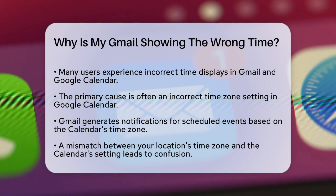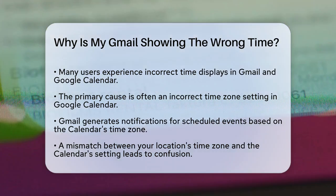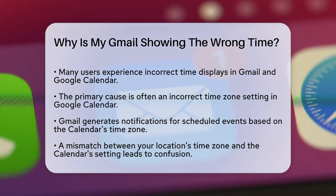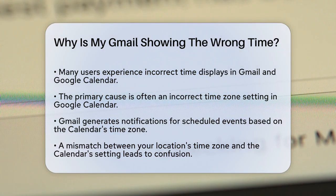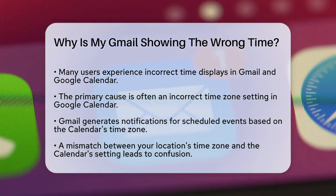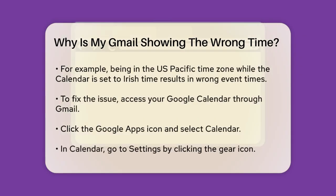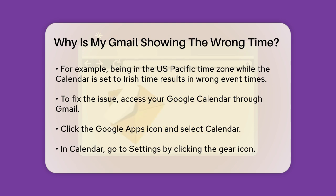The most common reason for this issue is that your Google Calendar time zone is set incorrectly. Here's how it works: when you receive an email with a scheduled event, Gmail often generates a notification that allows you to add the event to your Google Calendar. If your Google Calendar is set to a different time zone than the one you're in, this can cause confusion. For example, if you're in the US Pacific time zone but your Google Calendar is set to Irish time, IST, the event times will be displayed in the wrong time zone. However, if you look at the actual email content, the appointment time will be correct for your local time zone.